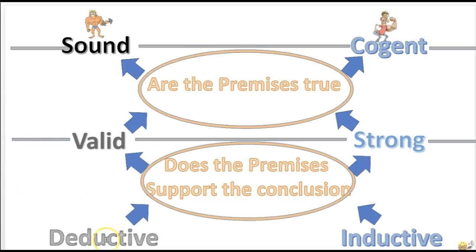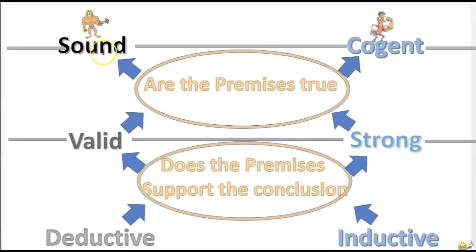To work your way up to a sound argument, ask these questions. First: does the premise support the conclusion? If so, then it's valid. Next step: are the premises true? If they're true, now you've got a sound argument. Likewise with inductive arguments — first, do the premises support the conclusion? If so, it's strong. Next: are they true? If so, it's cogent.